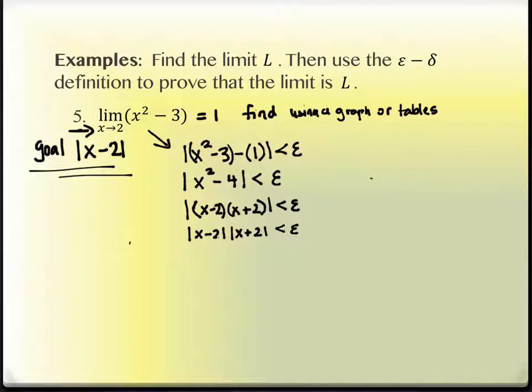So what we know is we know that our interval, or not our interval, but our value that we're trying to let x approach is two. So I'm going to set an interval around that. So we're going to say that x is nearby two. So x is between one and three. That's nearby to two.